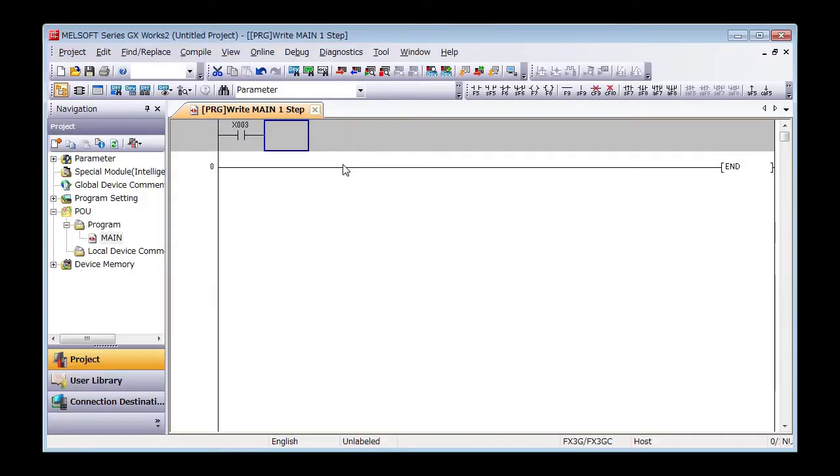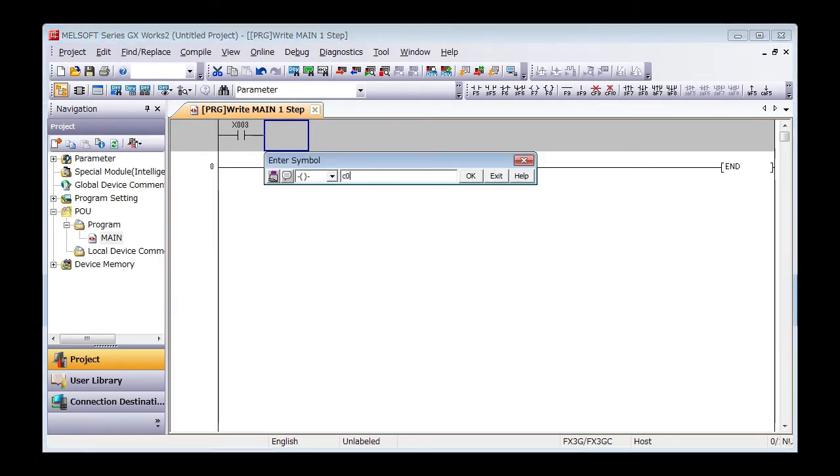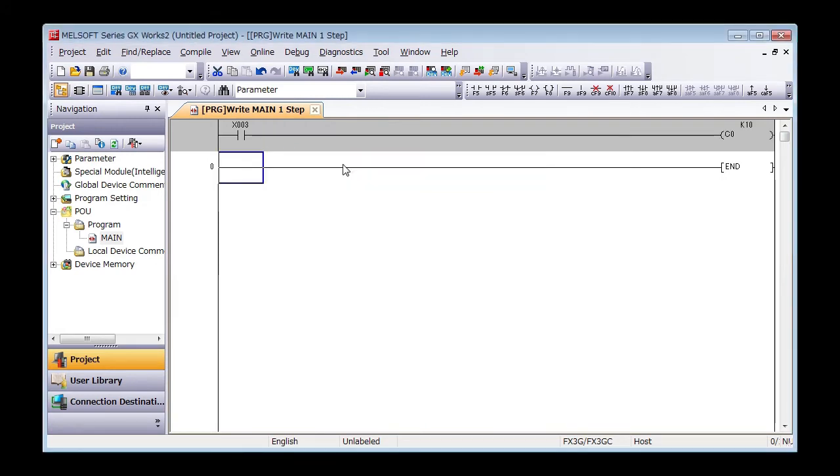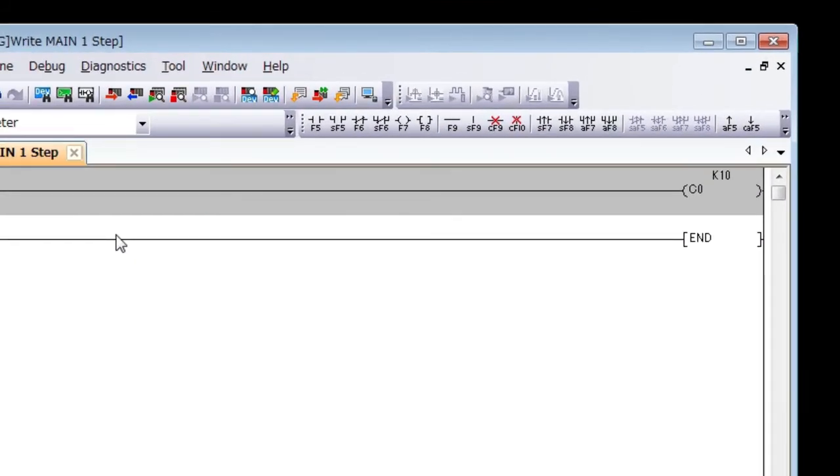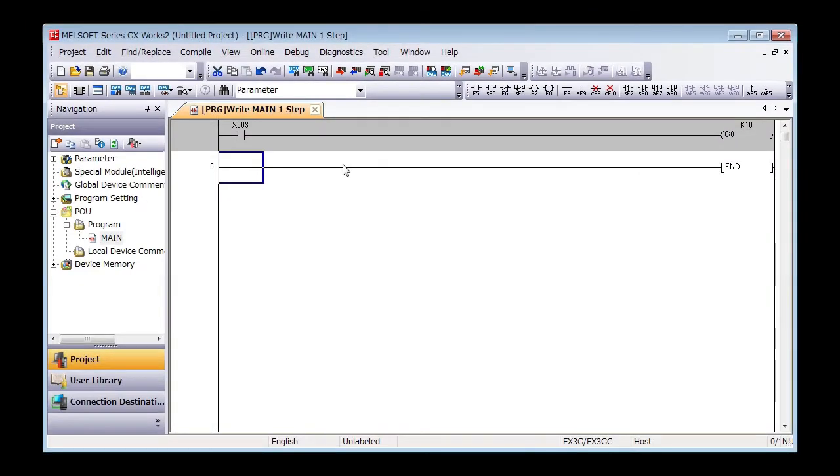Example in GxWorks2. Move the cursor next to the contact and press F7. Enter C space K10, then press Enter. This time, a counter coil will appear on the screen. To the right of the coil, you will see K10, which means that it will count up to 10.